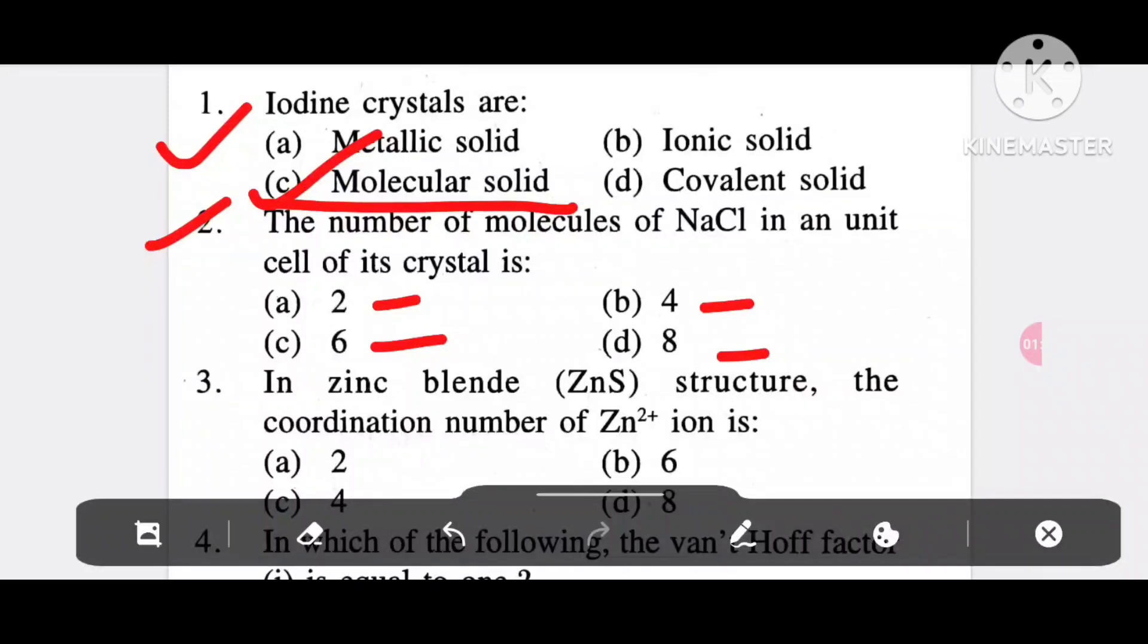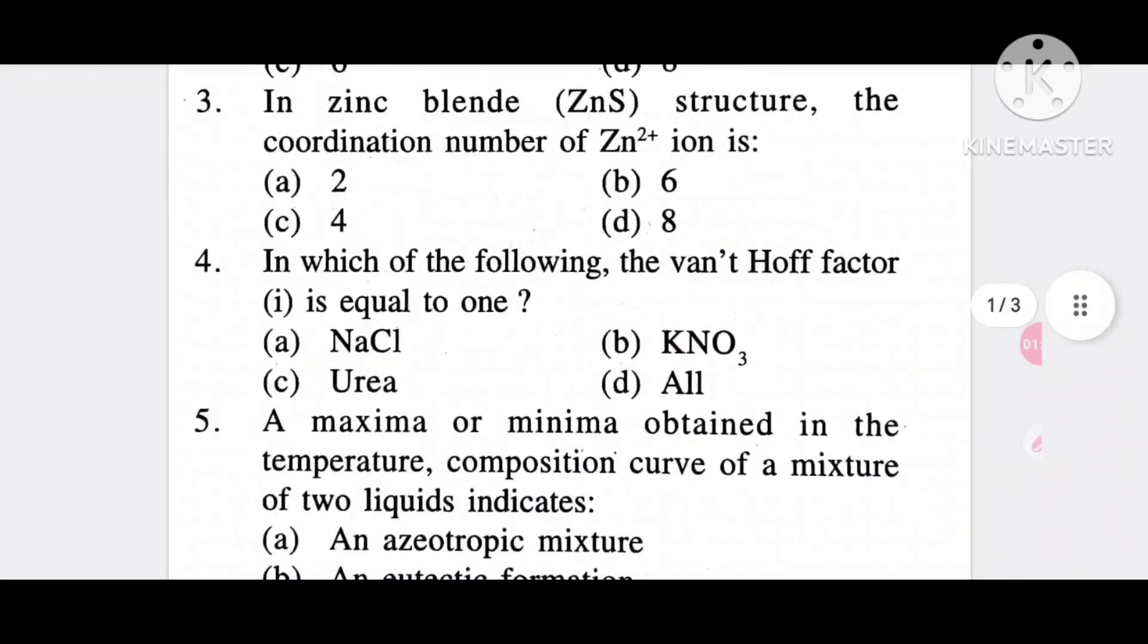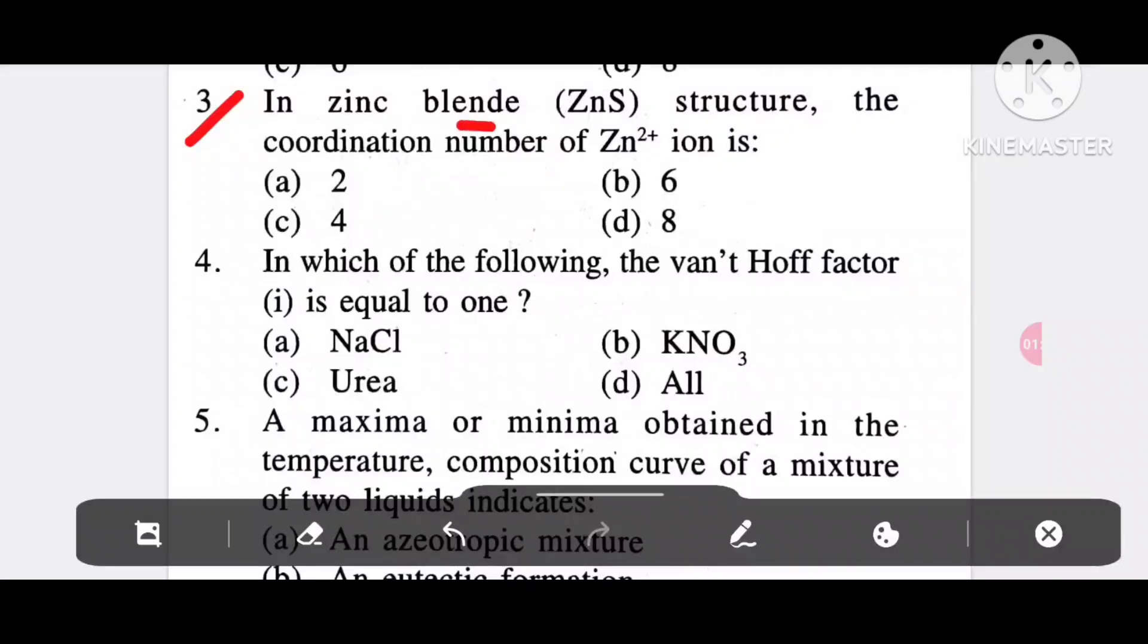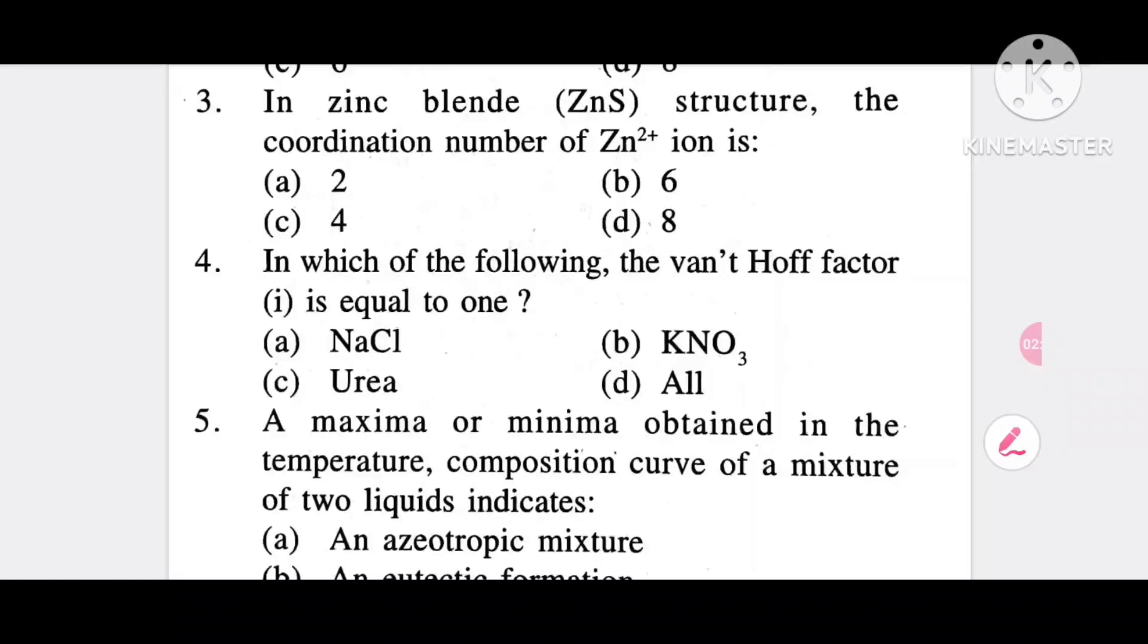Question 3: In the zinc blend ZnS structure, the coordination number of Zn2+ ion is option C, 4. Question 4: In which of the following the packing factor is equal to 1? It is urea, option C.